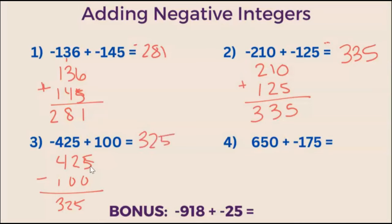Now look at the absolute value of these two numbers. The absolute value of negative 425 is just 425. The absolute value of 100 is 100. The highest number is the one you take the sign for. Negative 425 has the highest absolute value, so therefore the answer is negative.